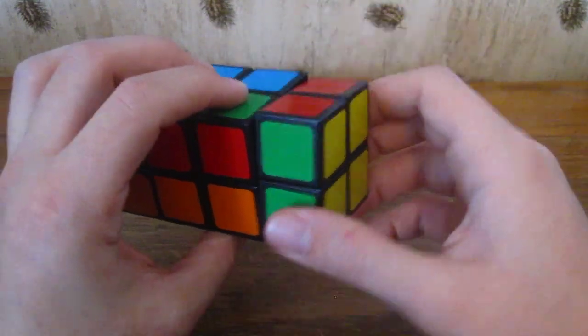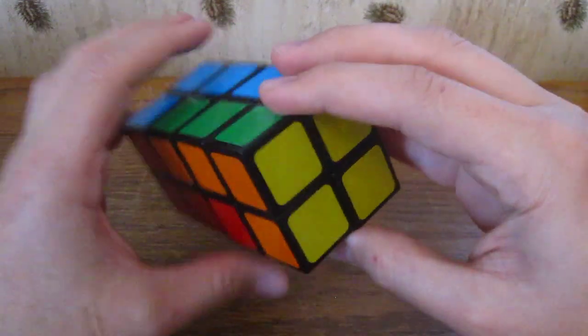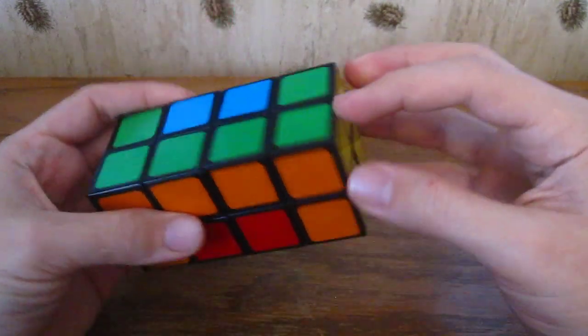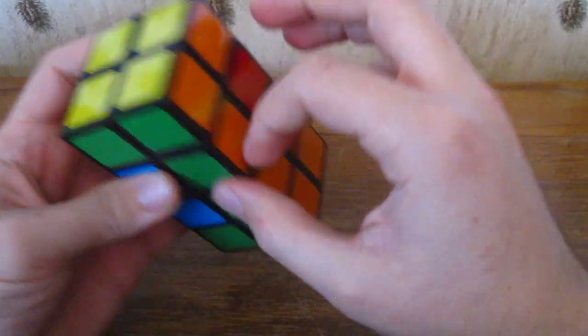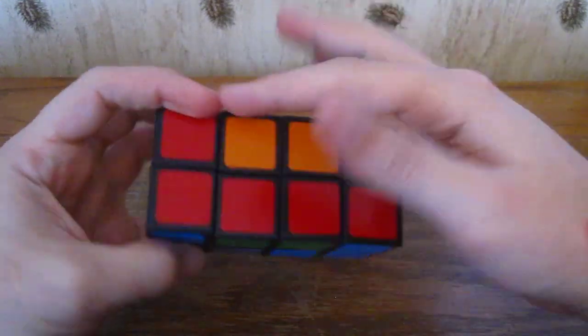We just line up what we can. There we go, we got all the green and oranges lined up. Now we just need to flip these pieces around.